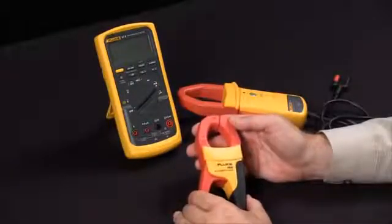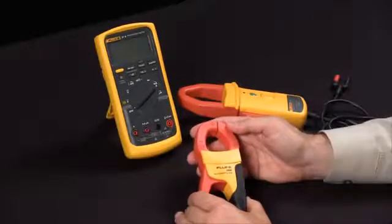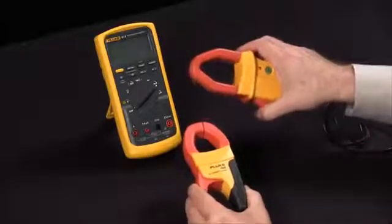Today I'd like to discuss one of the many ways you can extend the capabilities of your Fluke digital multimeter. At Fluke we have both AC as well as AC and DC current measuring capabilities.